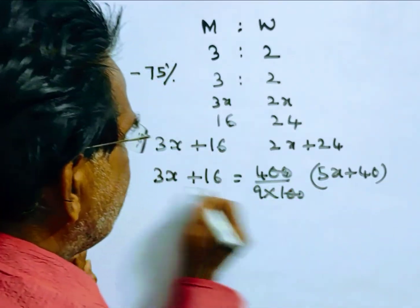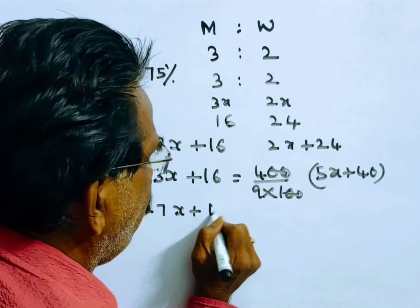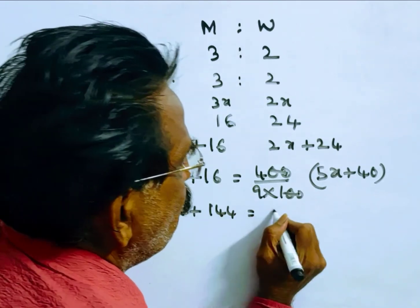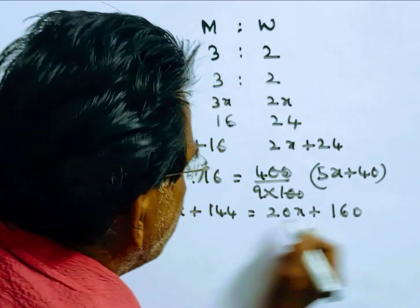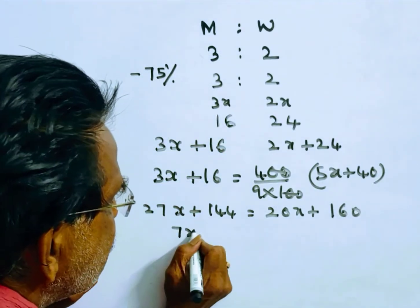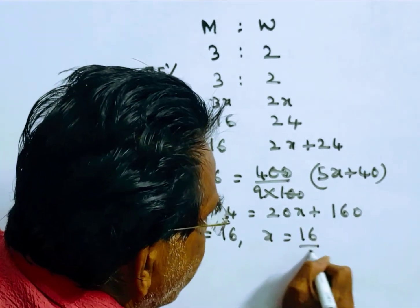Friends, 27x plus 144 is equal to 20x plus 160. It implies 7x is equal to 16, x is equal to 16 by 7.